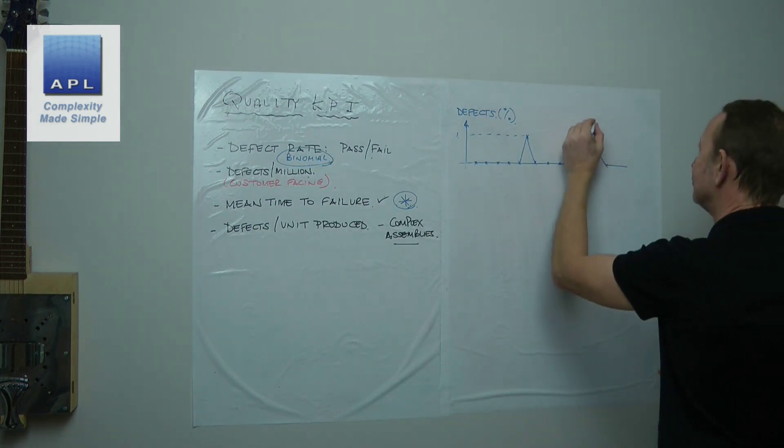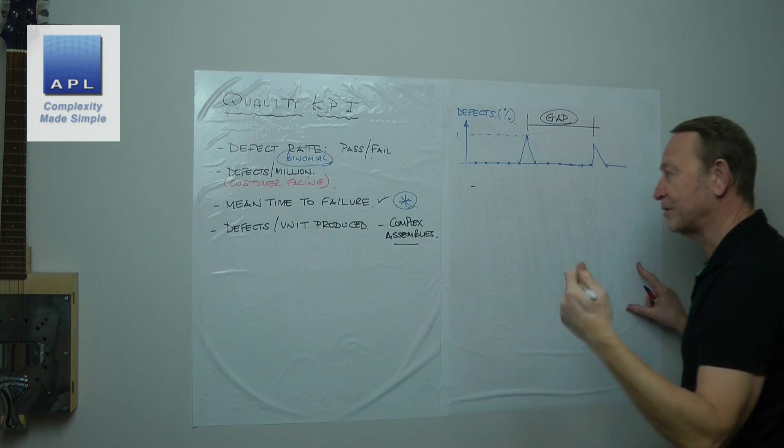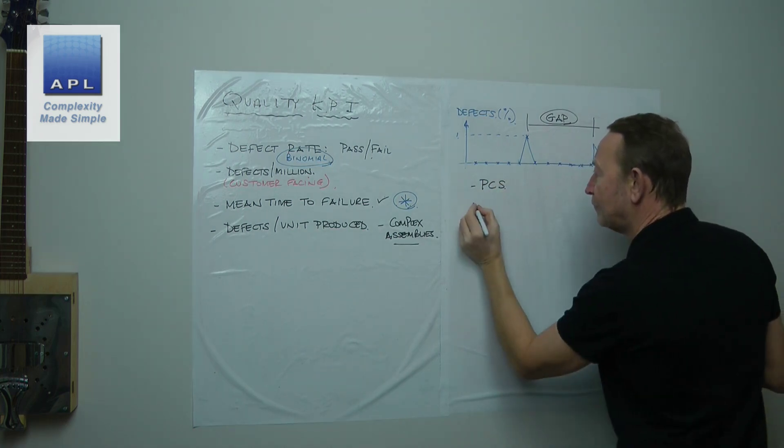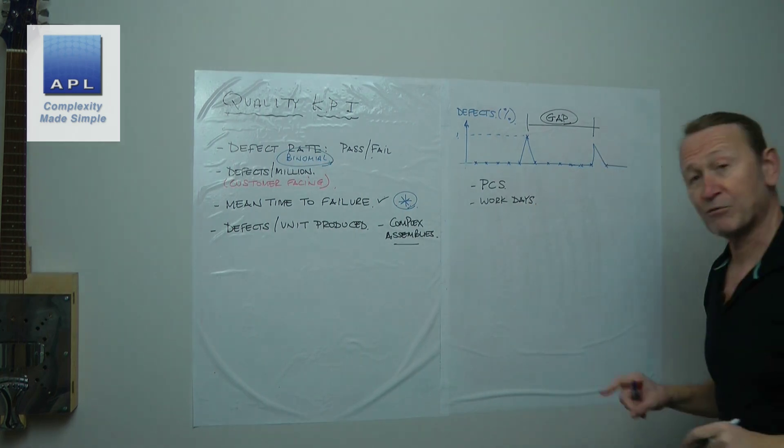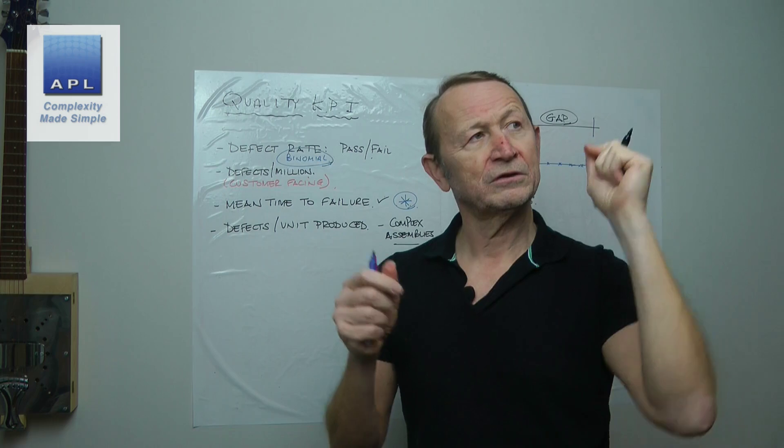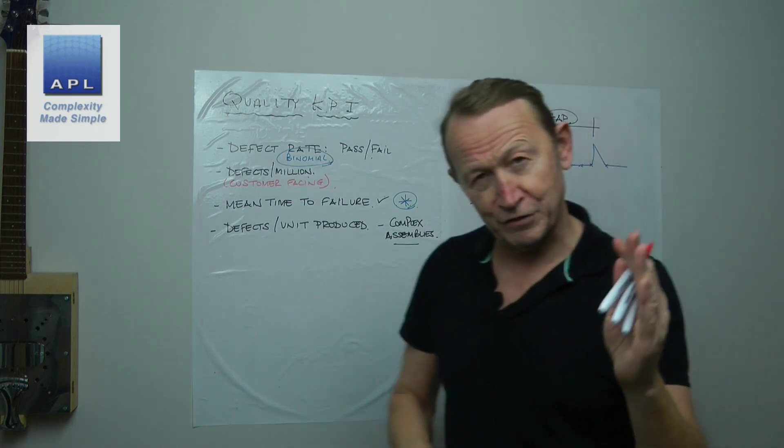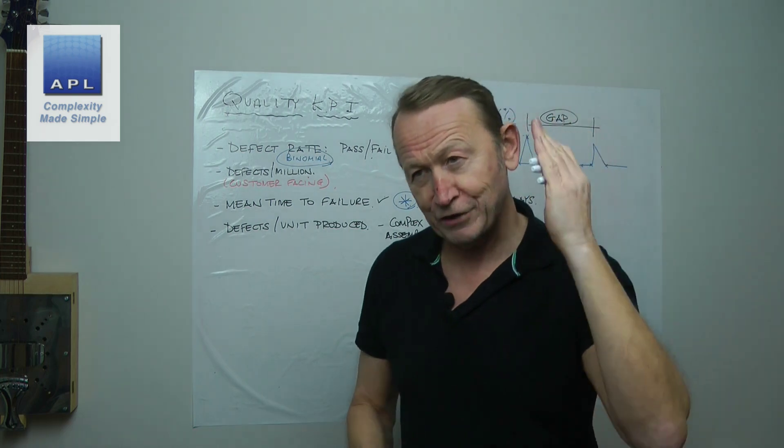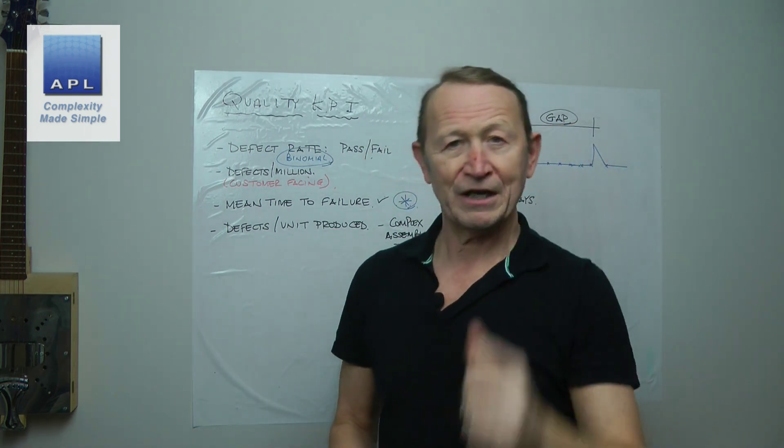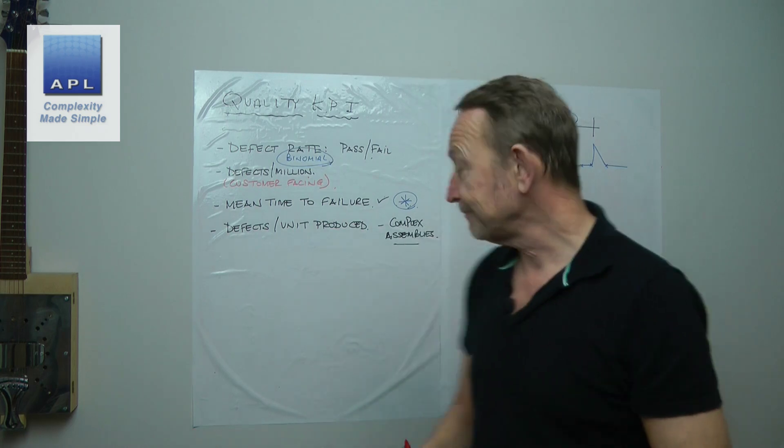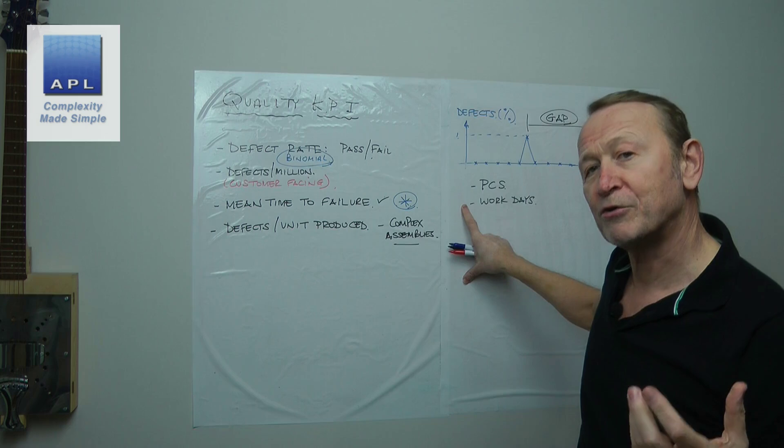Now what mean time to failure does, is measure the gap. It counts the gap. Now you can count the gap in two ways. You could count pieces. You could count work days. Either of those two work very well. Doesn't matter which one you use, to be honest. Whichever one works the best is the advice. If you are making a very even production rate, so for instance, if every day you completed a unit, 220 units a year, and that's very consistent production, then you could count pieces or you could count work days. And both of those graphs would show you the same thing.